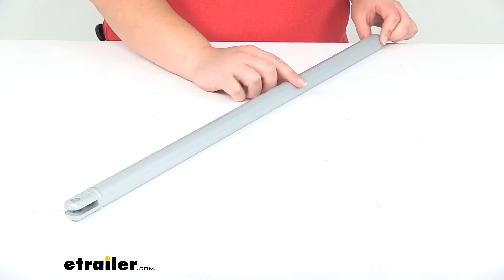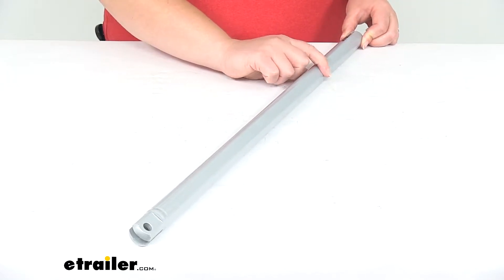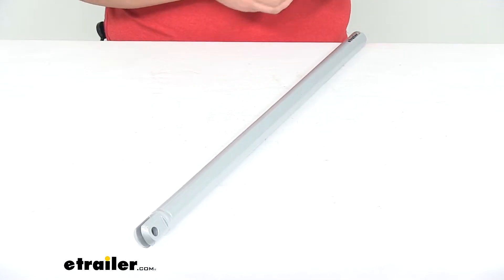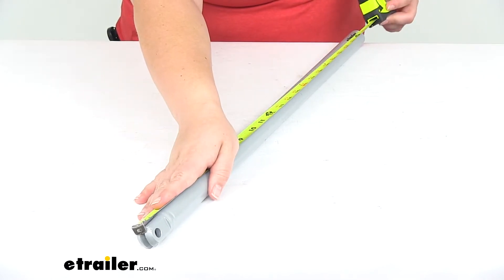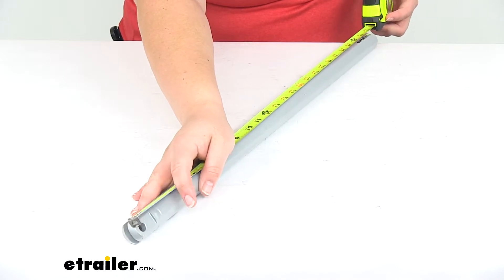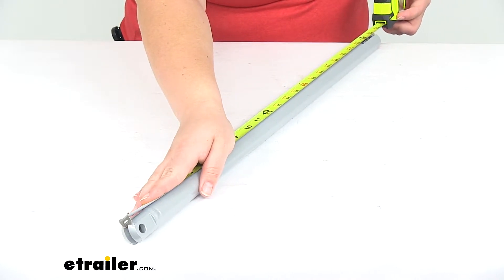Now the outer diameter of this stabilizer bar is one inch. If we go from the very end to end, it's just about twenty-five inches long.